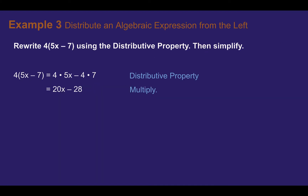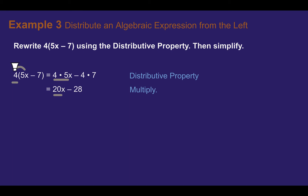Example 3: Distribute an algebraic expression from the left. Rewrite 4 times the quantity 5x minus 7 using the distributive property, then simplify. We have a factor of 4 out front that we're going to multiply by, just like with numerical expressions — we multiply first, then subtract. So 4 times 5 is 20, and the x stays as x. The variable did not change, just the coefficient. Then 4 times 7 is 28, and we keep the subtraction, giving us 20x minus 28.